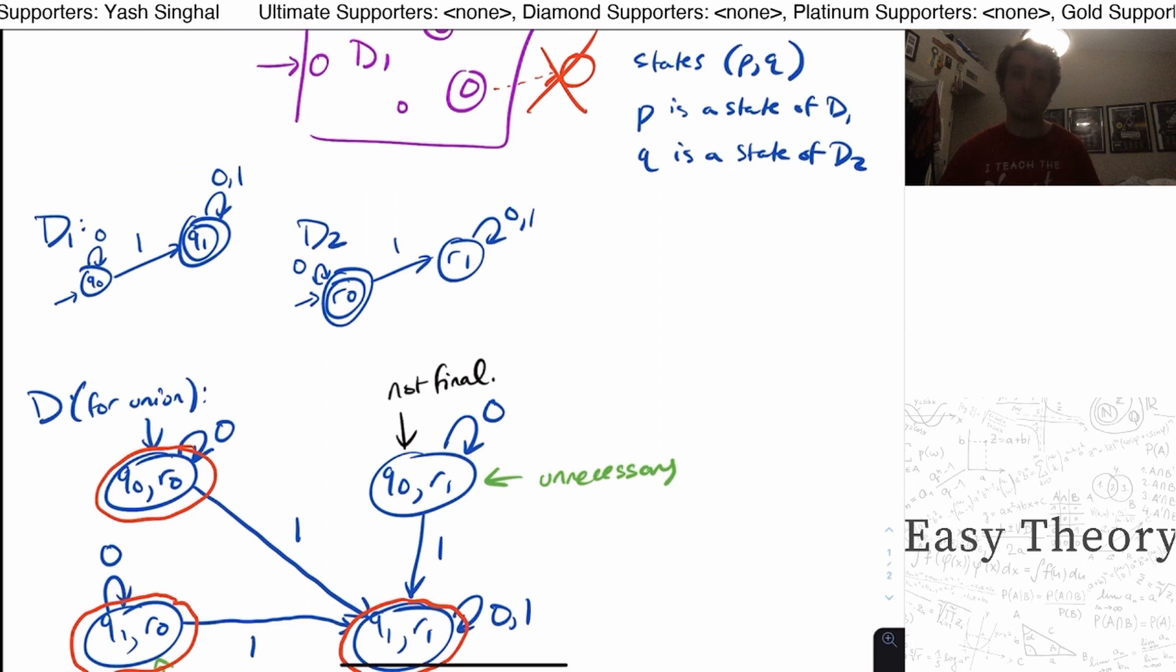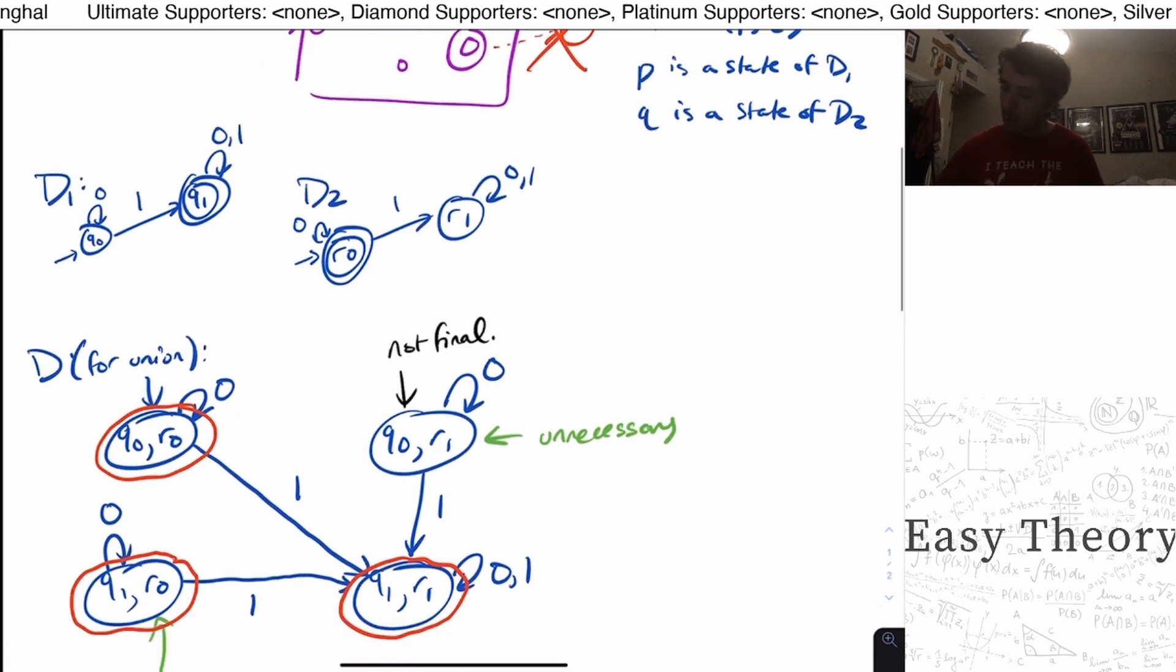But here, they're not sigma star or empty set because they both accept something and not accept something else. And so you need two states. Well, both of them have two states. So therefore, these are minimal DFAs.